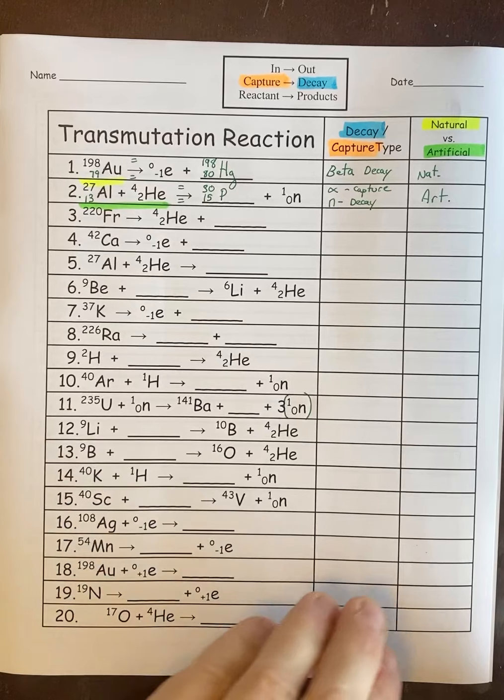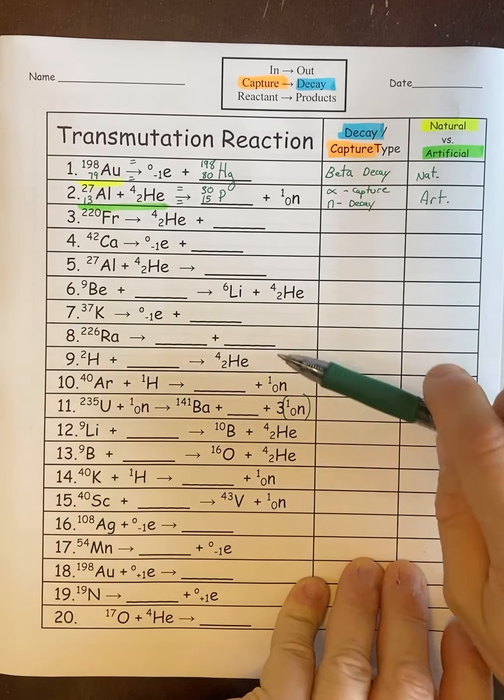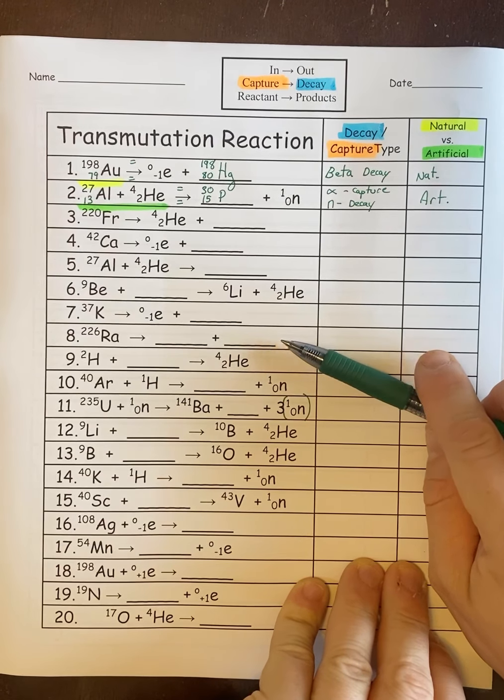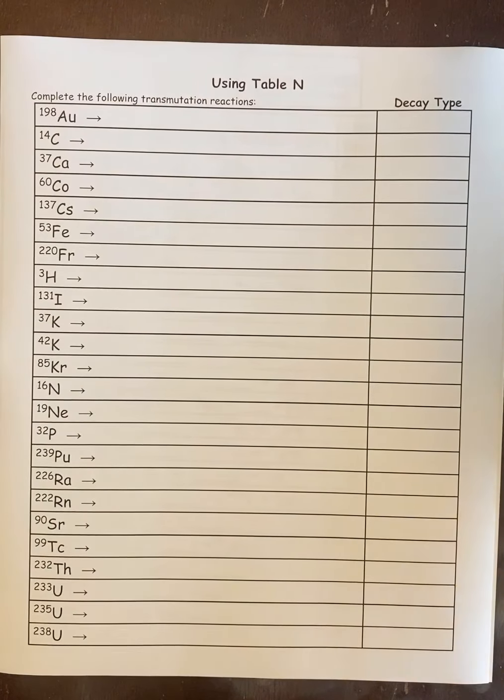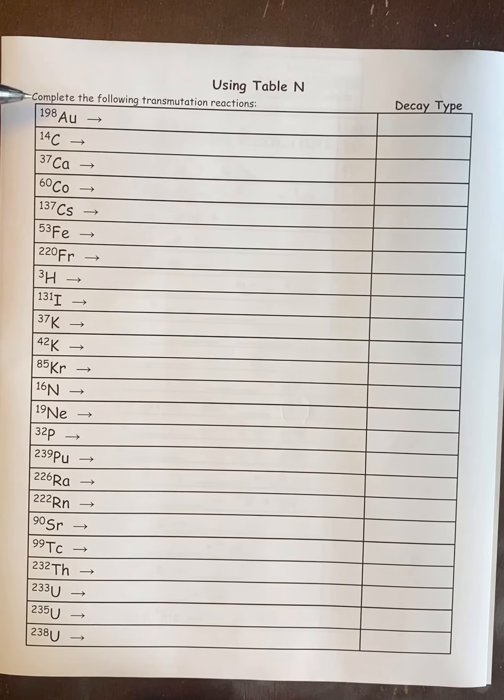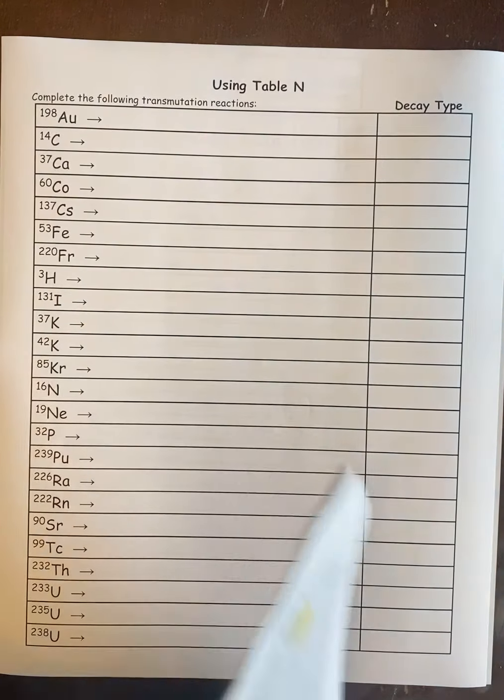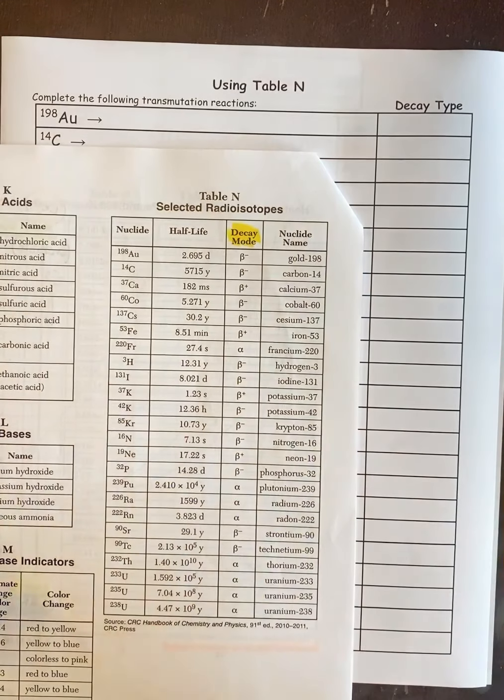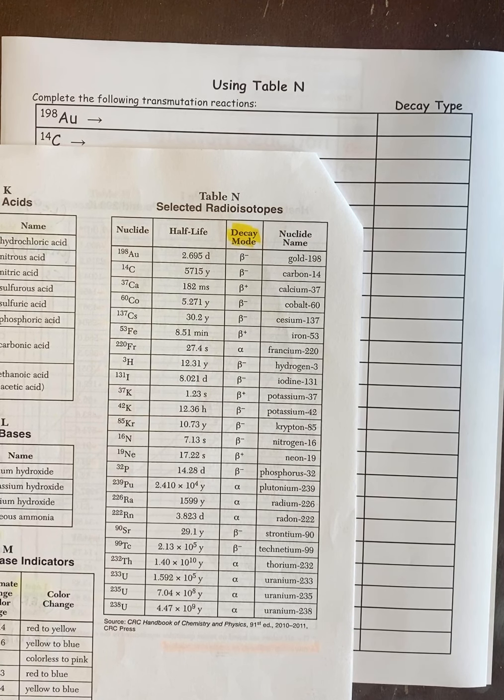But before we do that we're going to jump right to the back because number 8 is pretty much the exact same problems that are on the back. So we go to the back of the page. They look like this. And you're going to have an element and you're going to do the transmutation reaction. Now the way you do it is simple. You go to table N on the reference table. So table N, this is the first time we've using it. Here it is.